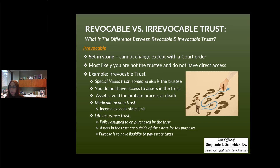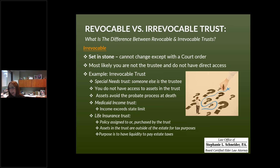The last type of irrevocable trust we're going to look at today is called a life insurance trust. The main reason a person would choose this type of irrevocable trust is if they had a very large taxable estate. Congress sets what we call the estate tax exemption — the maximum amount a person can die owning assets without a federal estate tax being charged. That number is now about $13 million, and we may see some changes in 2023 or future years.